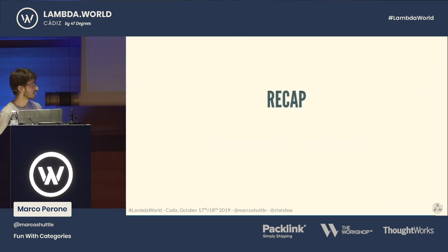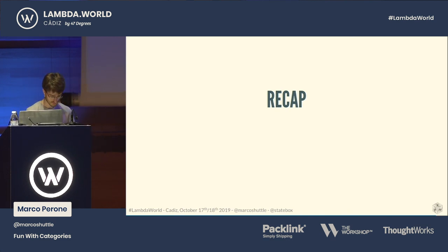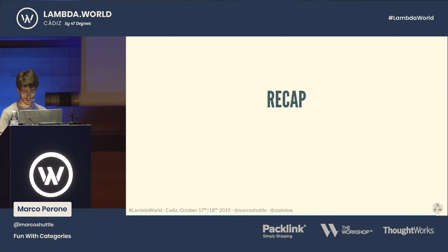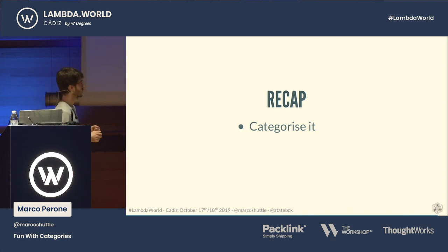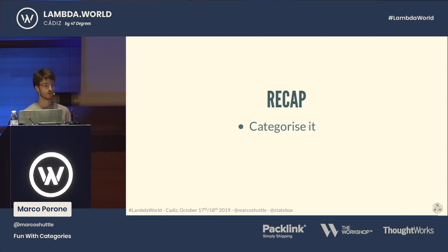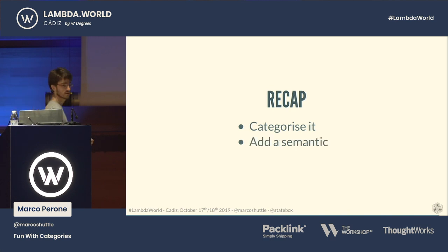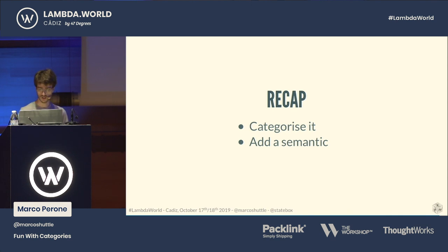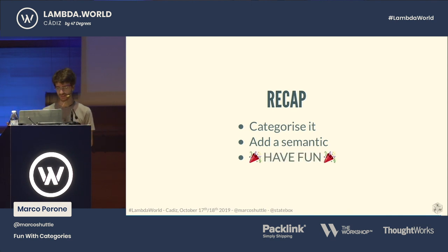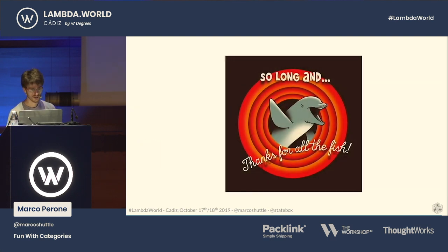To recap: if you want to model something, one nice way to do it is to categorize it — model it with terms and concepts from category theory. Then add semantics to it by mapping out with a functor to a more concrete category where you can actually perform computation. And then hopefully have fun. Thanks everyone.